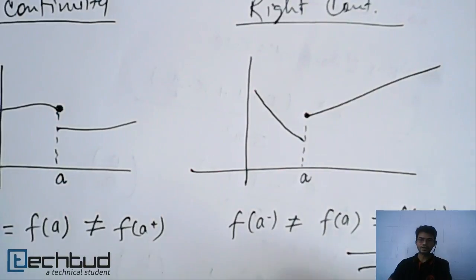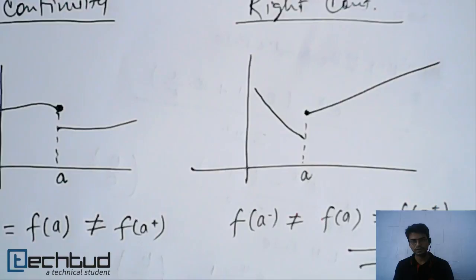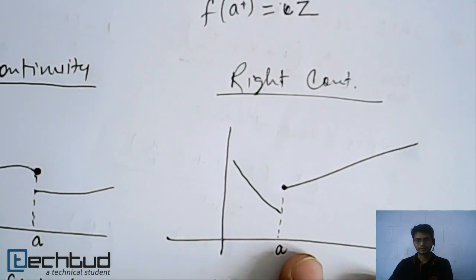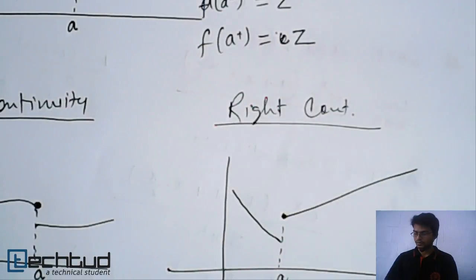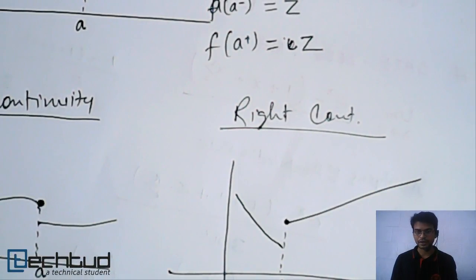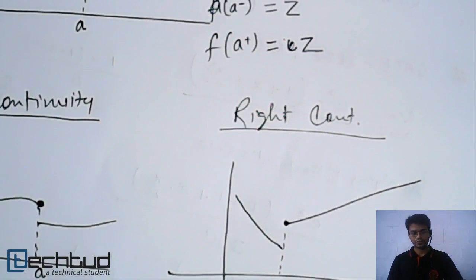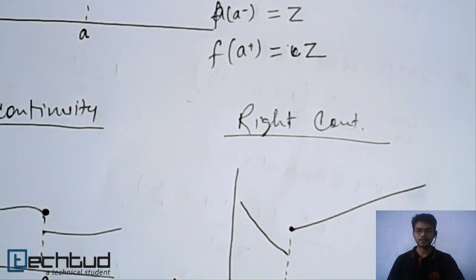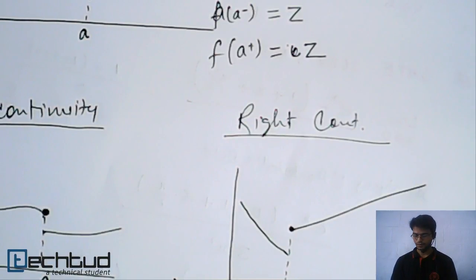A function is continuous if it is both left continuous and right continuous. A function cannot be continuous if either left or right continuity is missing. If a function is only left continuous or only right continuous, it doesn't mean the function is fully continuous. I hope the concept of continuity is clear from this lecture. You should solve the problems in the doubt section, and examples will be posted in the example section. Contribute to the resources on TechTed — it is a contribution-centric community where everyone should collaborate and help each other. See you in the next lecture. Thanks for watching.